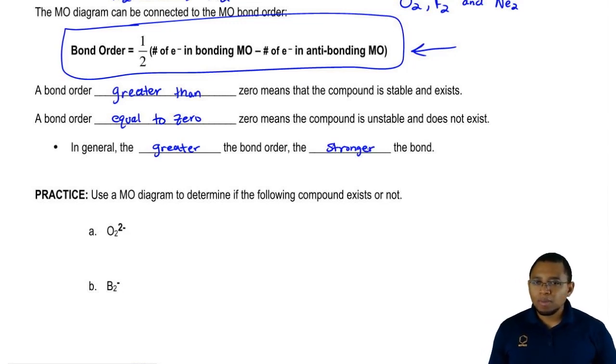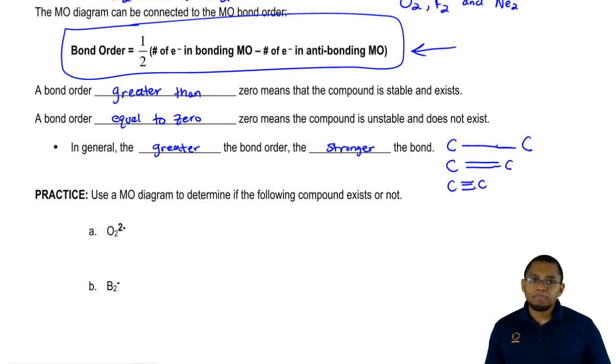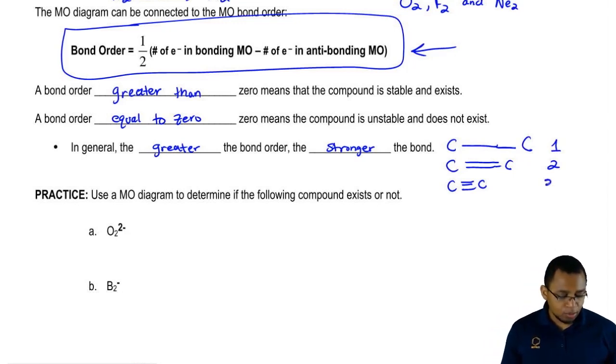This ties into single bonds, double bonds, triple bonds. Remember, let's say we had two carbons single bonded to each other. We had two carbons double bonded to each other and we had two carbons triple bonded to each other. We would say that the bond order of the two carbons that are single bonded is 1. The bond order of the double bond is 2 because there's two bonds and the bond order of the triple bond is 3.